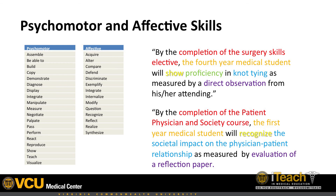Somewhat less common but still important are affective skills, which portray attitudes we hope our students will achieve. Here is an example using the template: by the completion of the Patient, Physician, and Society course, the first-year medical student will recognize the societal impact on the physician-patient relationship as measured by an evaluation of a reflection paper. The when is the end of the course, the who is an M1 level student, the verb is 'recognize,' the what is societal impact on the physician-patient relationship, and the assessment and degree are somewhat linked — implying an acceptable evaluation of a reflective paper.